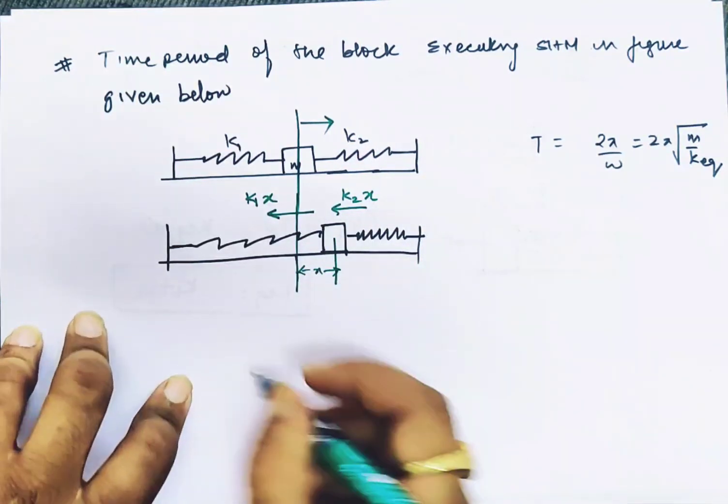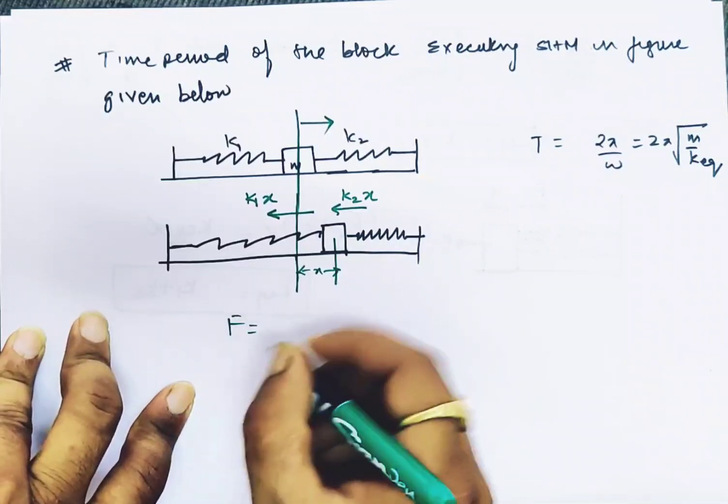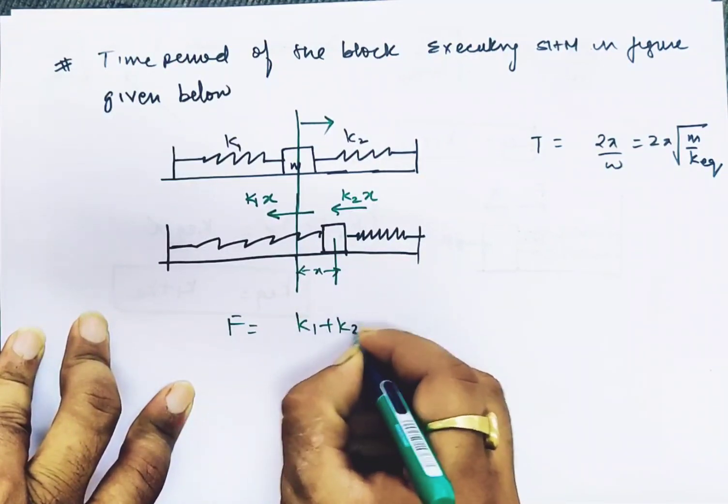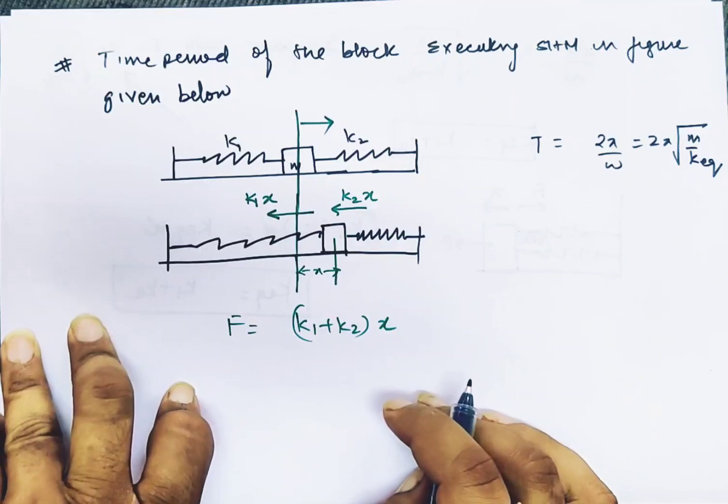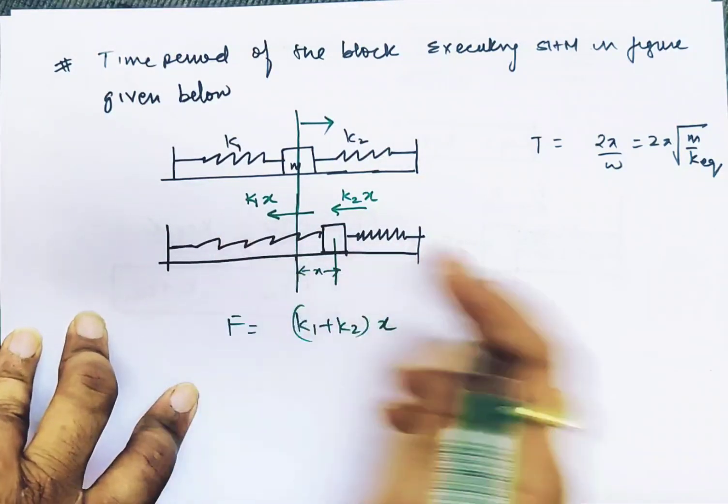The force is the same. What is the net force? K1 plus k2 times x, because this is k1x and k2x.